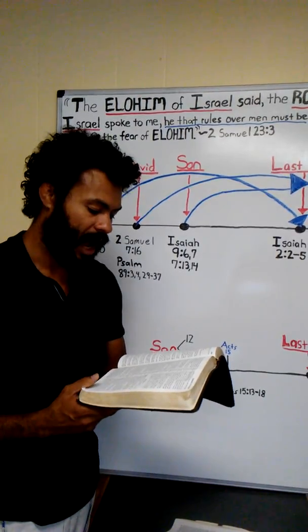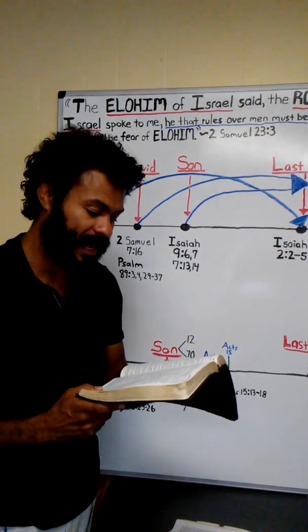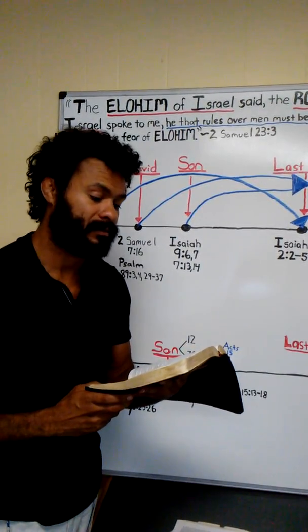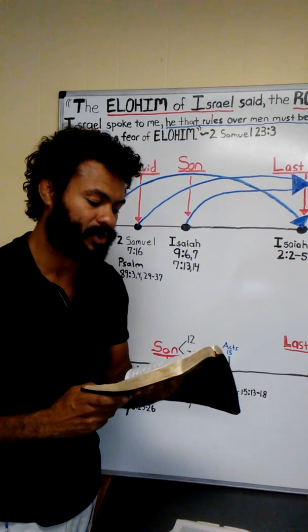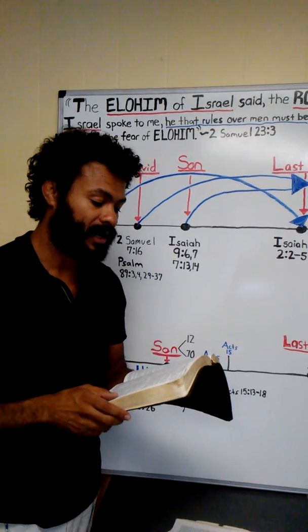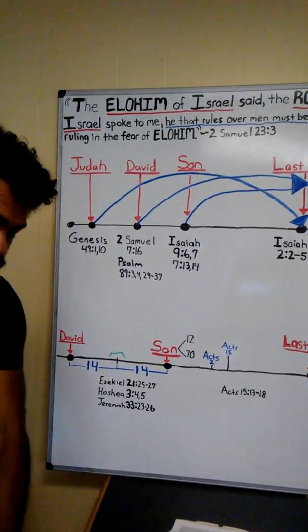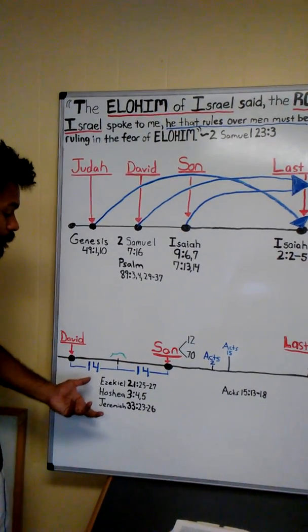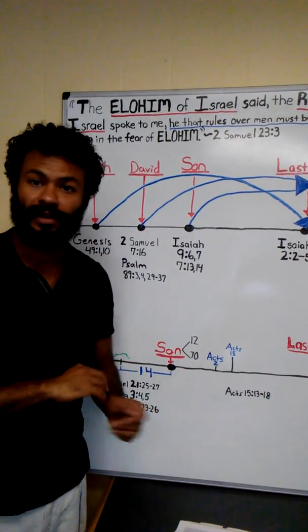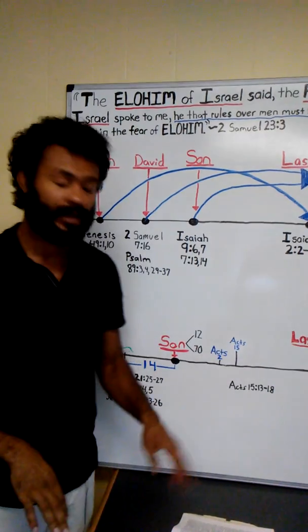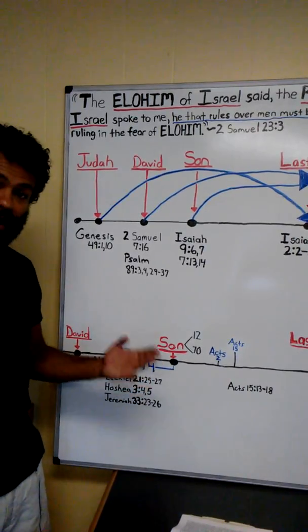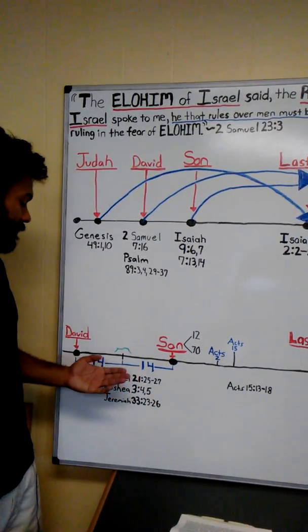I will overturn, overturn, overturn it. And it shall be no more, until he comes, whose right it is, I will give it to him. Until he comes, whose right it is, I will give it to him. It's referring to the right of the king. He was talking about the princes, the kings of Israel—they were wicked, that he was going to cut it off. He was taking off the crown, removing it. He was overthrowing it, and he was going to wait until the right of the one who comes to take up that crown.